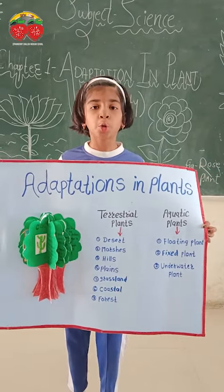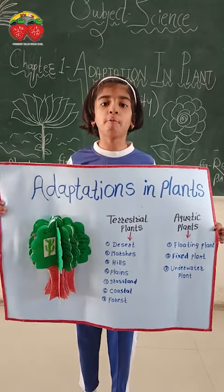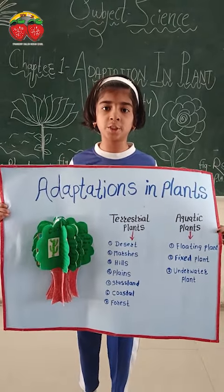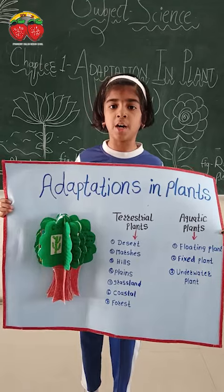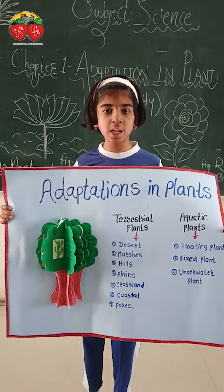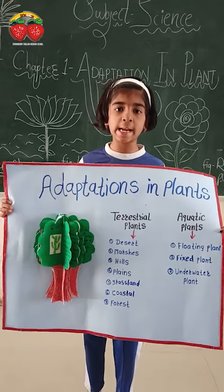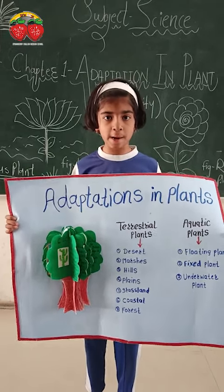There are two types of adaptation in plants. First, terrestrial plants. Second, aquatic plants.